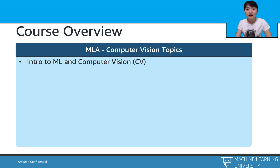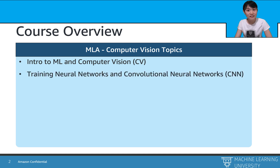Next, we will have a quick introduction to computer vision, which includes computer vision applications and image representation. Second, we will talk about the fundamental components of neural networks — which is deep learning — and convolutional neural networks, especially how to train them in code.